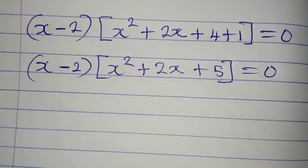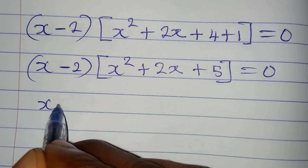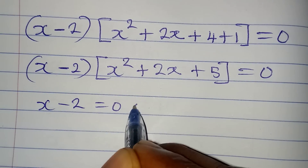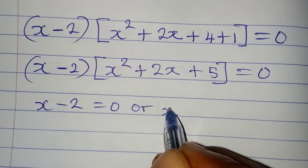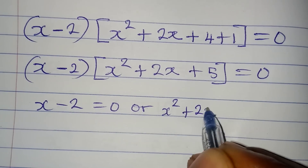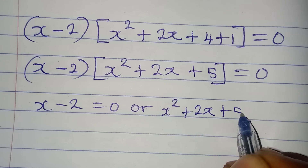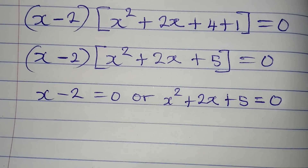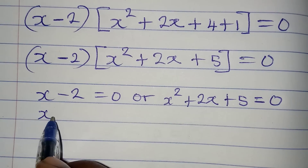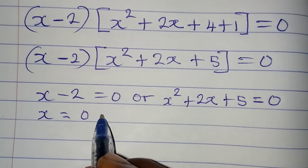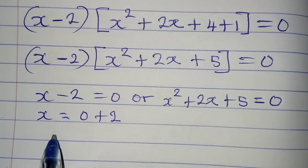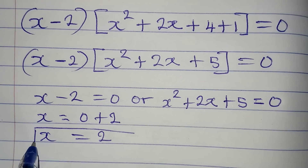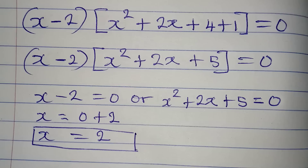At this point we apply the zero product rule: x minus 2 equals 0, or x squared plus 2x plus 5 equals 0. From the left factor, x equals 2. So x equals 2 is one solution to this problem.